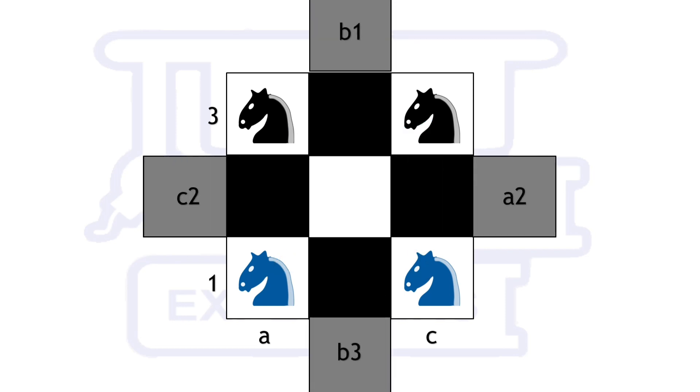These are the new positions of square b1, b3, a2 and c2. We have now reduced the problem into a simpler one.